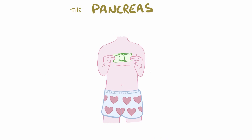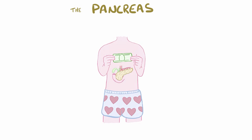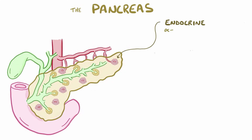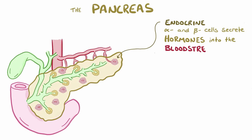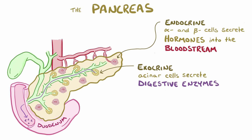The pancreas is a long, skinny gland the length of a dollar bill, located in the upper abdomen, or the epigastric region, behind the stomach. It plays endocrine roles — for example, alpha and beta cells make hormones like insulin and glucagon that are secreted into the bloodstream — but it also plays exocrine roles. For example, acinar cells make digestive enzymes that are secreted into the duodenum to help digest food.